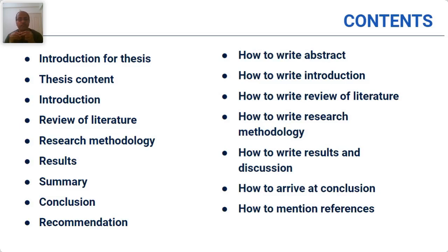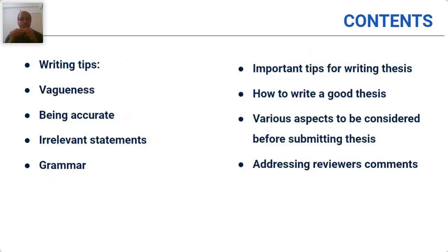Having introduced those, we talk about how to write each of them — how to write the abstract, introduction, review of literature, research methodology, results, discussion, conclusion and references. Then we come to writing tips. This is something I've focused on this time because many participants know they can write but are not aware of certain writing tips, such as avoiding vagueness, being accurate, not using irrelevant statements, and a bit of grammar.